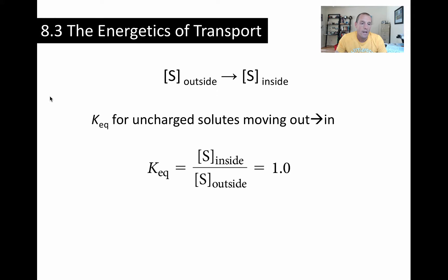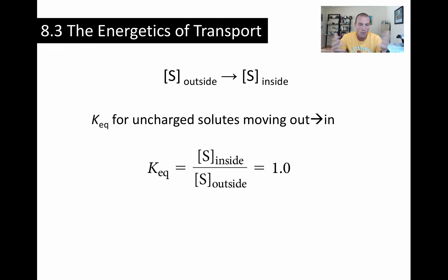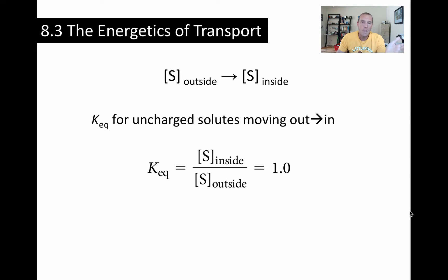We're going to look at some scenarios where we have a solute moving from a concentration outside the cell to a concentration inside the cell. Let's start with the simplest scenario: a small lipophilic solute that can freely diffuse back and forth across the membrane. We let it come to equilibrium, so the concentration outside the cell is the same as the concentration inside the cell. If we calculate the equilibrium constant for that, it will always equal one, because any number over itself always divides out to be one.